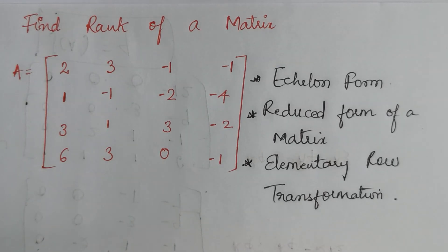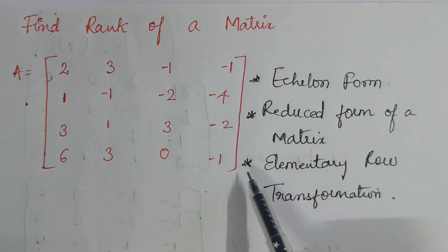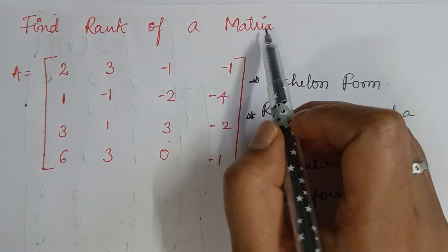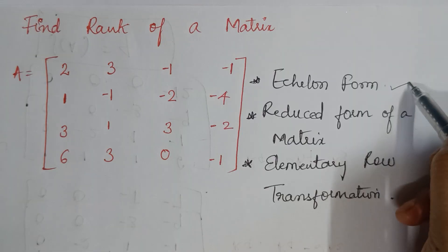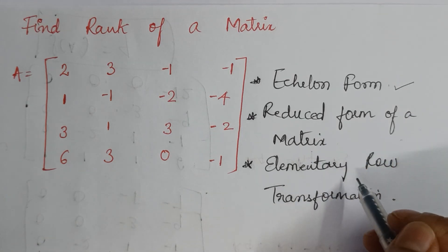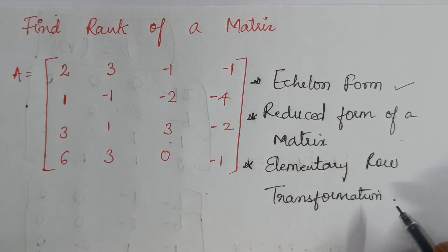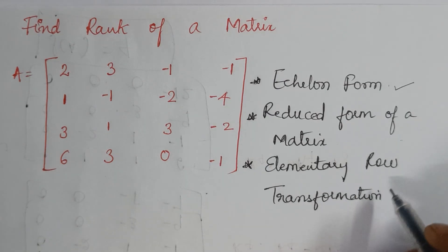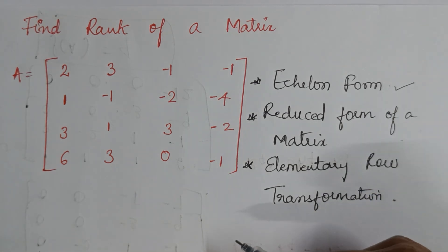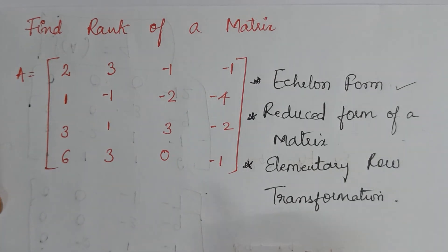Hello everyone, welcome back to my YouTube channel 'Learn with Sumi.' In this video we're going to find the rank of a 4×4 matrix. No specific method is given, so by default we are going to use echelon form, also called reduced form, for the matrix. The elementary transformation we are going to use is row transformation. We have rows and columns, so it is recommended to use row transformation. If you don't know the details, please check my previous videos in the same playlist.